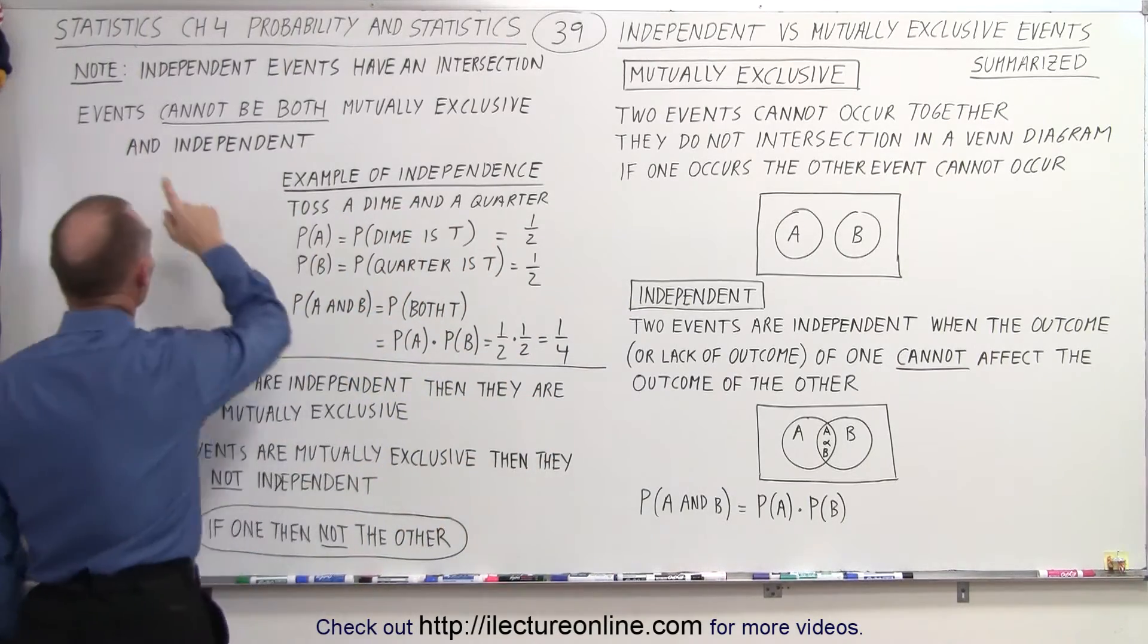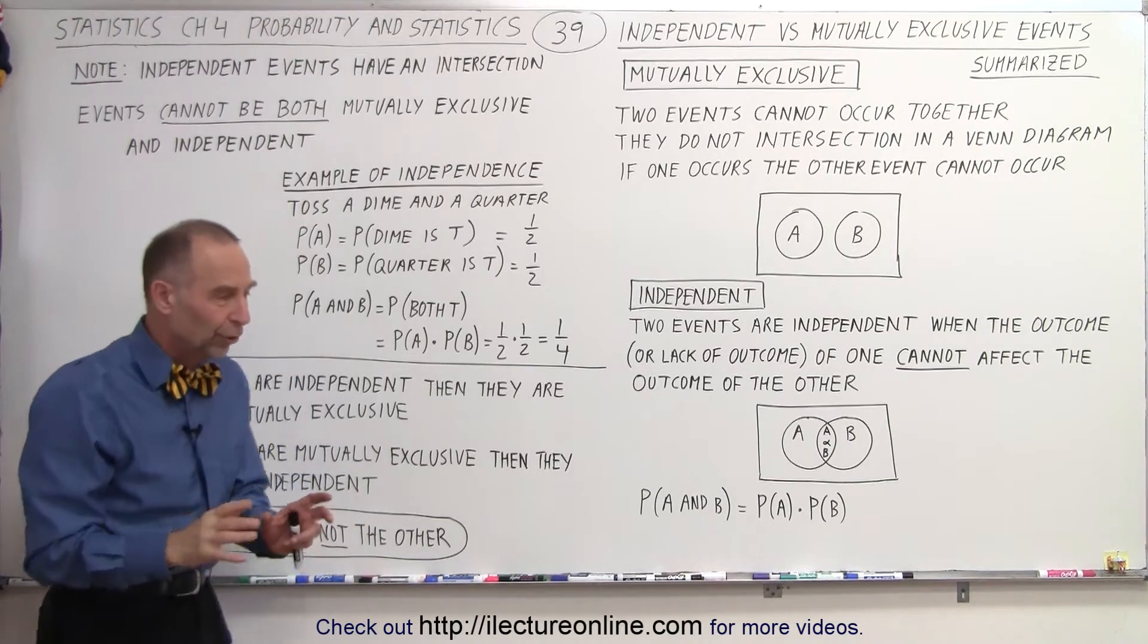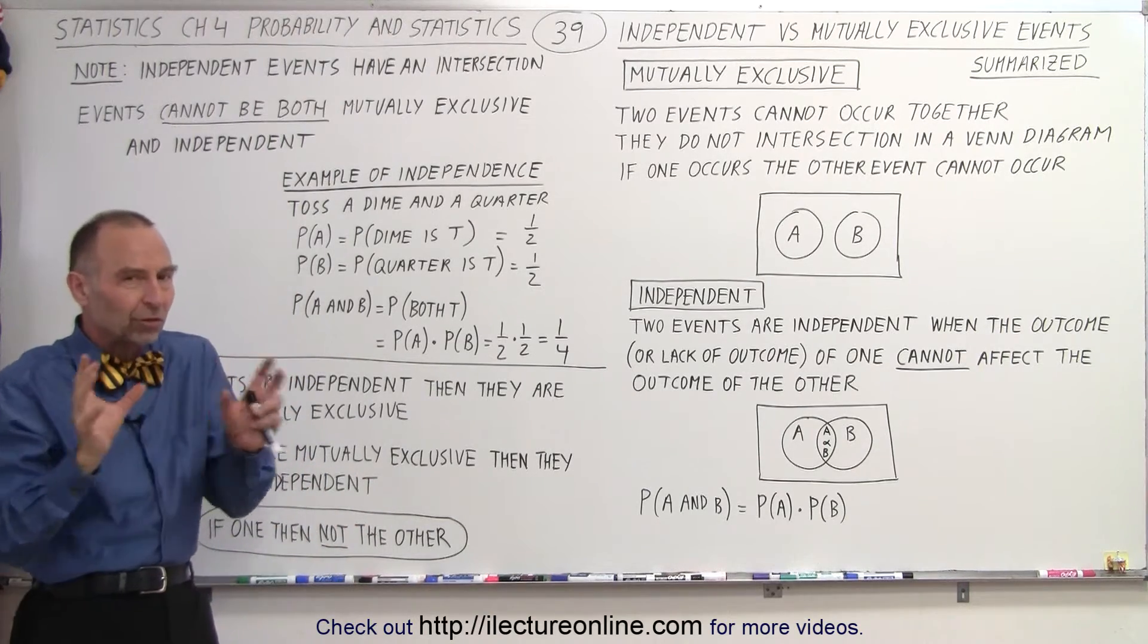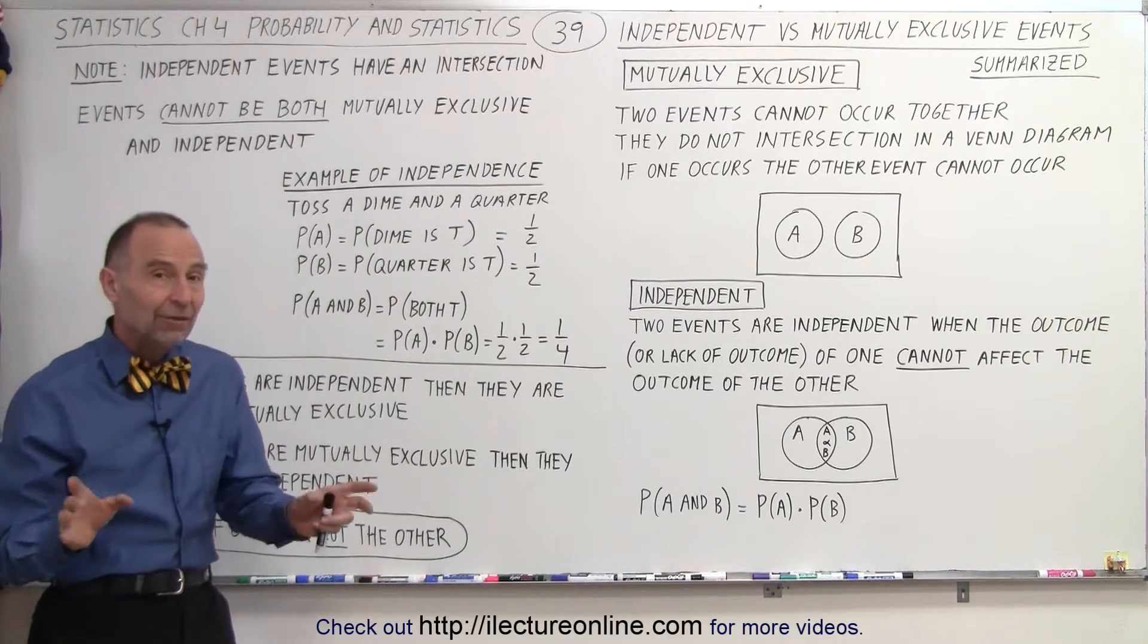And secondly, events cannot be both mutually exclusive and independent. That's really important. So if you establish that they're mutually exclusive, they cannot possibly be independent.